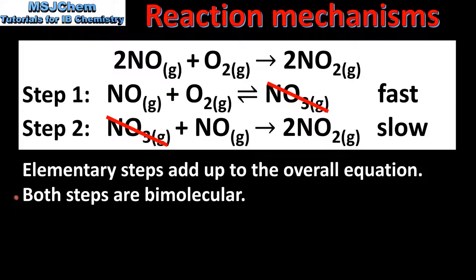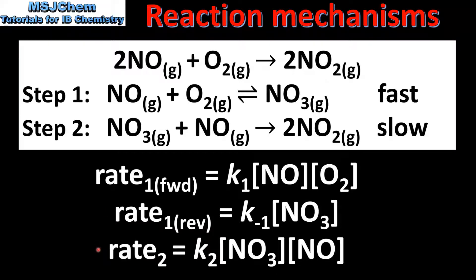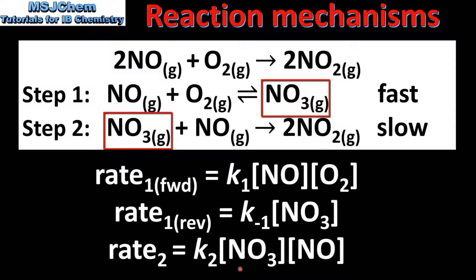Because the second step is the slow step, we need to take a slightly different approach. We start by writing the rate expressions for the forward reaction in step 1 and the reverse reaction in step 1. Then we write the rate expression for step 2. If we look at the rate expression for step 2, we can see that it contains NO3, which is a reaction intermediate. Overall rate expressions cannot include reaction intermediates, so we need to eliminate NO3 from this rate expression. To do this, we need to express the concentration of NO3 in terms of reactants.